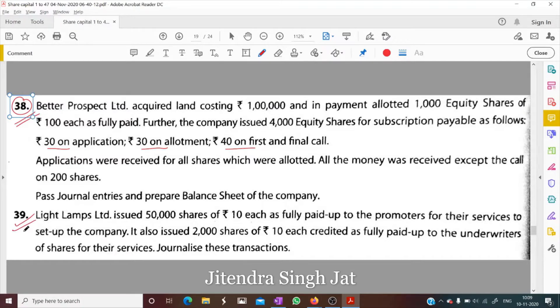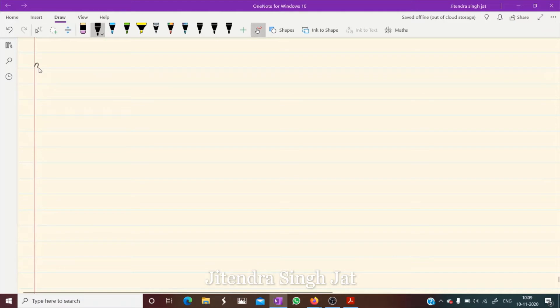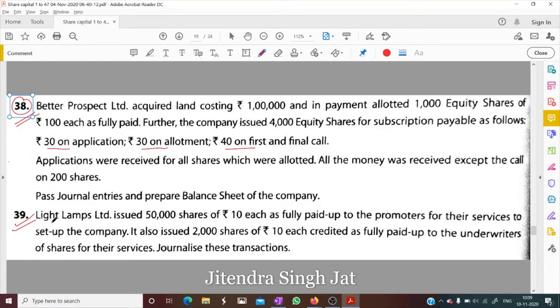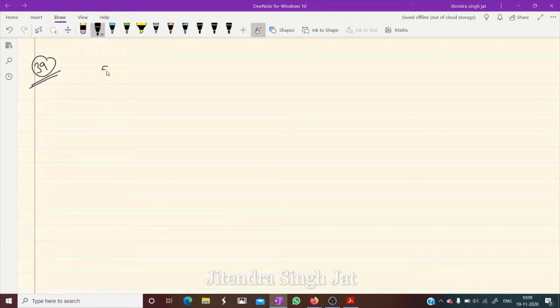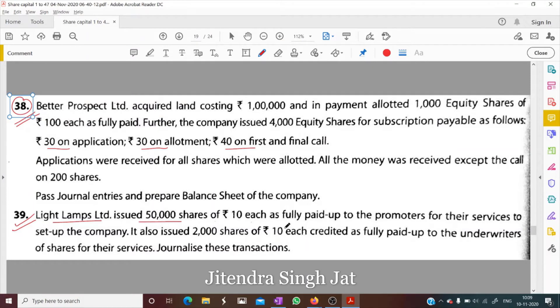We will take question number 39. Light Lamp Limited issued 50,000 shares of Rs 10, 50,000 shares of Rs 10 issued as fully paid up to promoters for their services to set up the company.